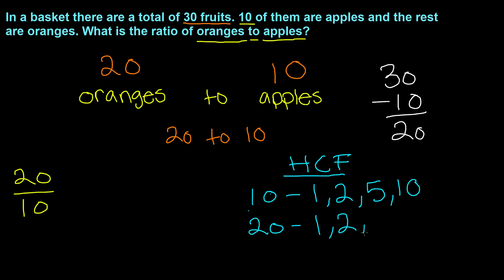And factors for number 20 would be 1, 2, 5, 10, and 20. Now we need to find the highest common factor, and the highest common factor amongst these factors is the number 10.